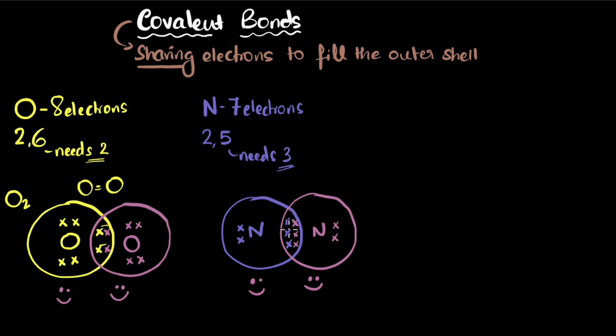Since nitrogen shares three pairs of electrons, we say that nitrogen forms a triple bond. So nitrogen also exists as an N₂ covalently bonded molecule.